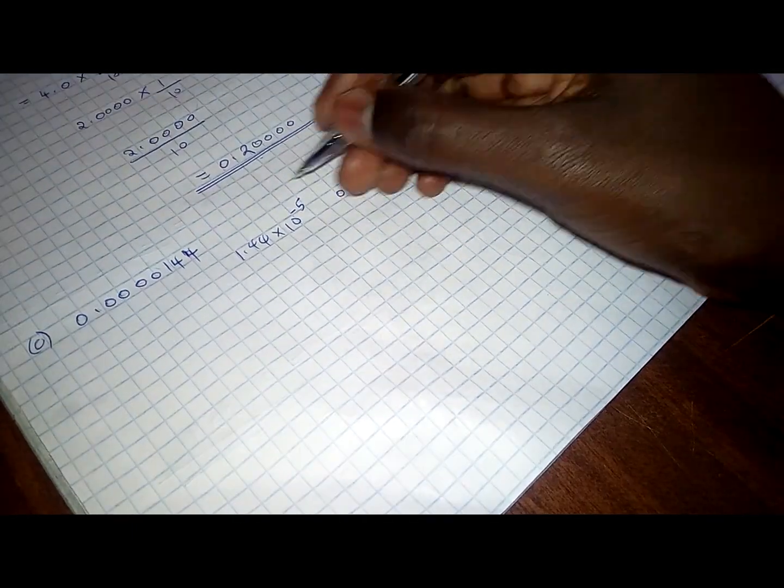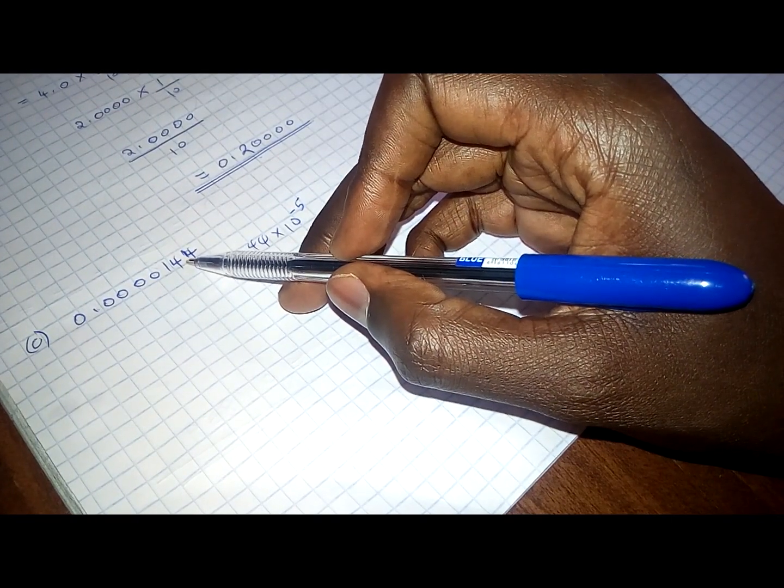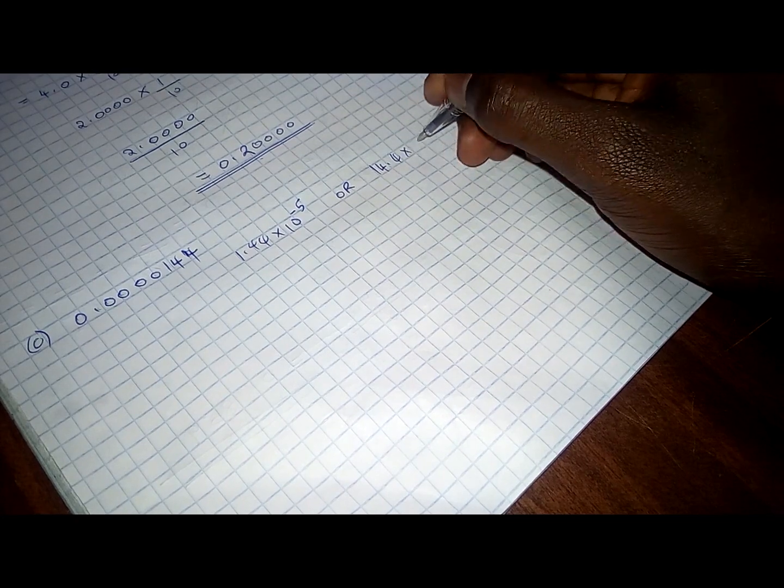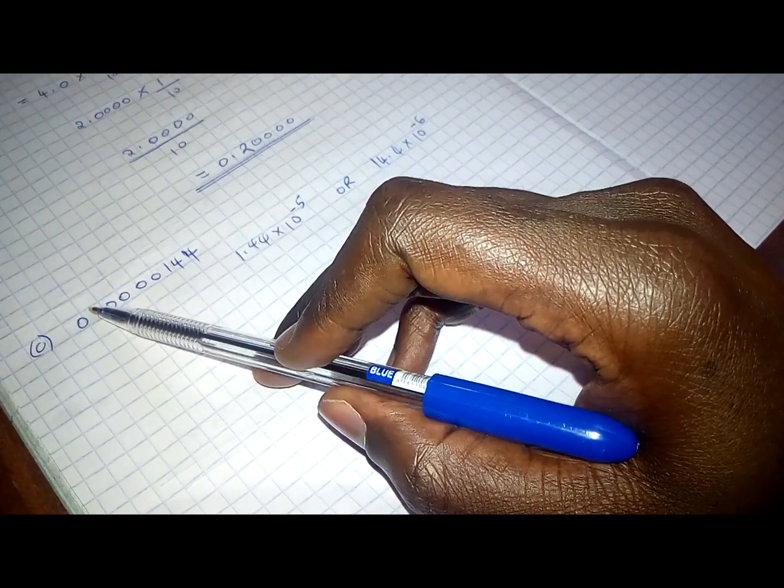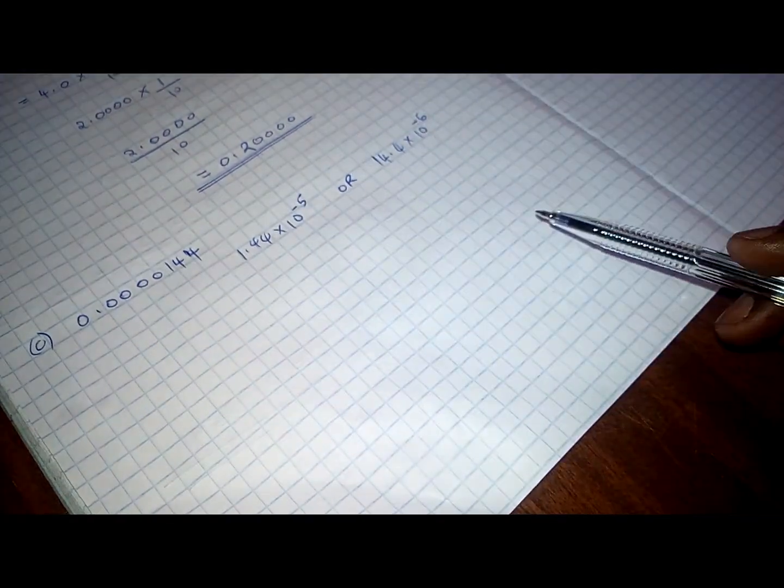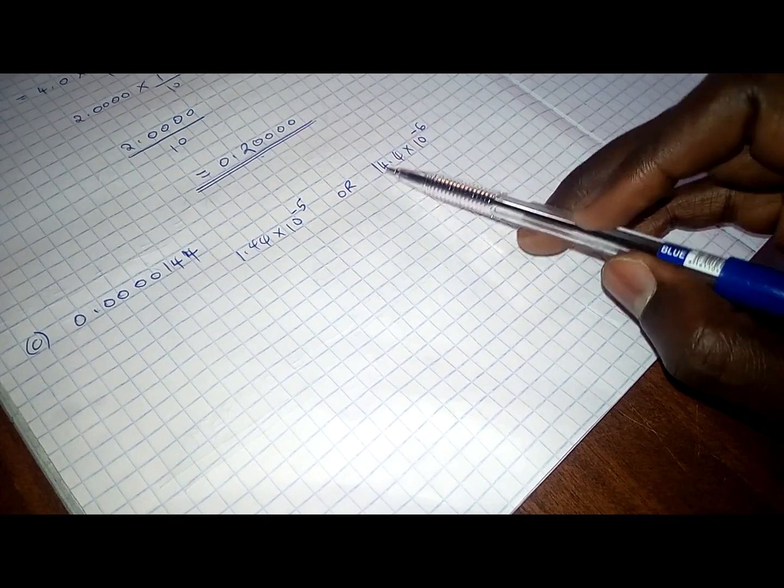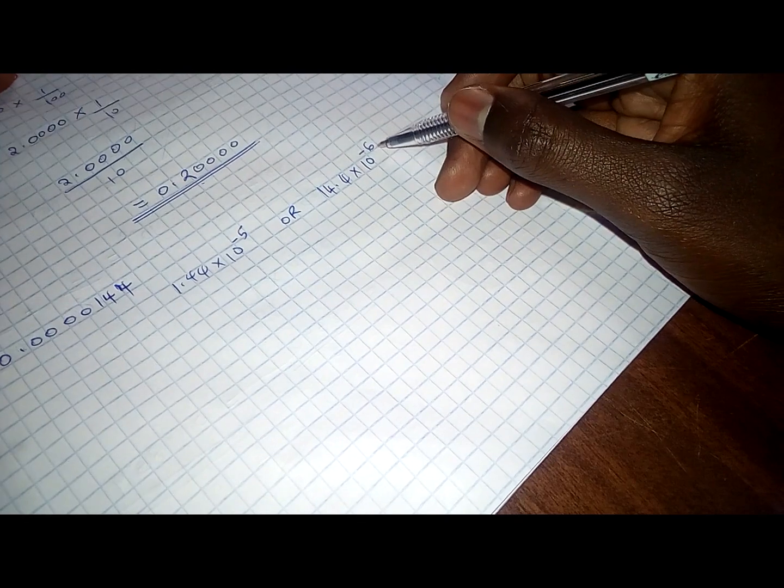Or, we can have it as, if we decide to put our decimal point between the 4s, we have 14.4 times 10 raised to power negative 6 because it will have moved 6 times: 1, 2, 3, 4, 5, 6. So, which one are we going to choose? We are going to choose this because the power here is even.